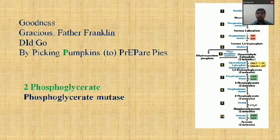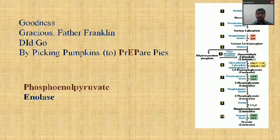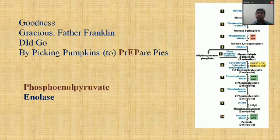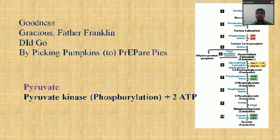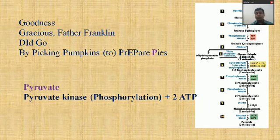'Prepare' (P) — reaction eight, formation of 2-phosphoglycerate, catalyzed by phosphoglycerate mutase. 'Pies' (P) — reaction nine, 2-phosphoglycerate is converted into phosphoenolpyruvate, catalyzed by enolase — an energy-rich molecule. The last one: conversion of phosphoenolpyruvate into pyruvate or pyruvic acid, with formation of two ATP molecules, catalyzed by pyruvate kinase, reaction type phosphorylation.